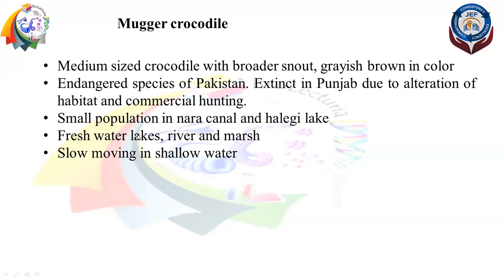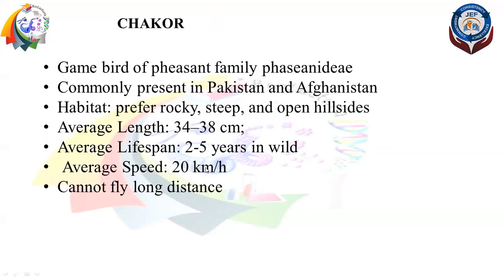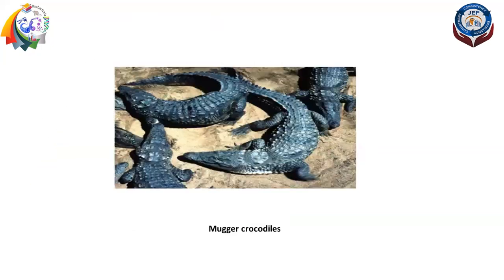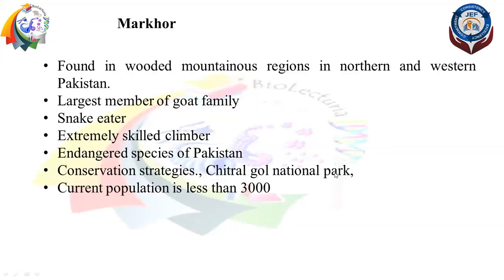The Mugger Crocodile is found in lakes, rivers, and marshes, also in slow-moving and shallow water. You can see this greyish-brown colored Mugger Crocodile.